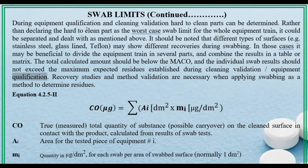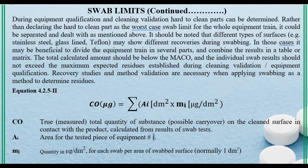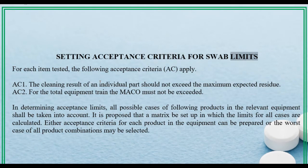The total calculated amount should be below the MACO, and the individual swab results should not exceed the maximum expected residues established during cleaning validation and equipment qualification. Recovery studies and method validation are necessary when applying swabbing as a method to determine residues. Equation 4.2.5-2: dm (corrected) equals the measured total quantity of substance — the possible carryover on the clean surface in contact with the product — calculated from results of swab tests. R is the area for the tested piece of equipment; me is the quantity in g/dm² for each swab per area of swabbed surface, normally 1 dm².